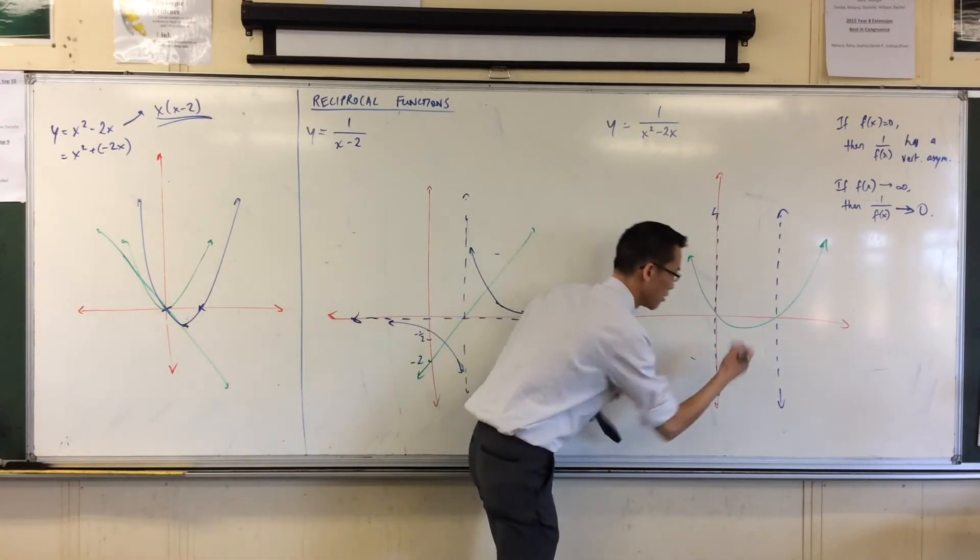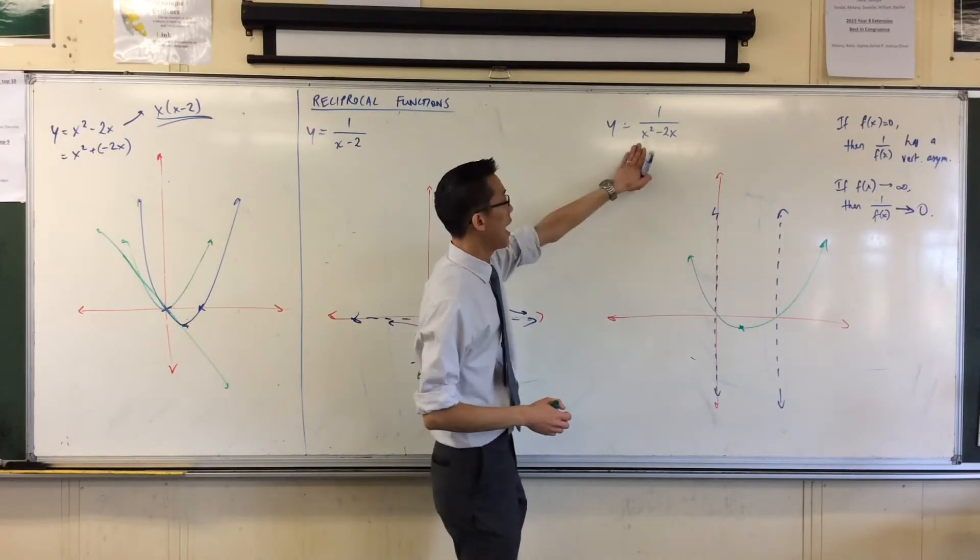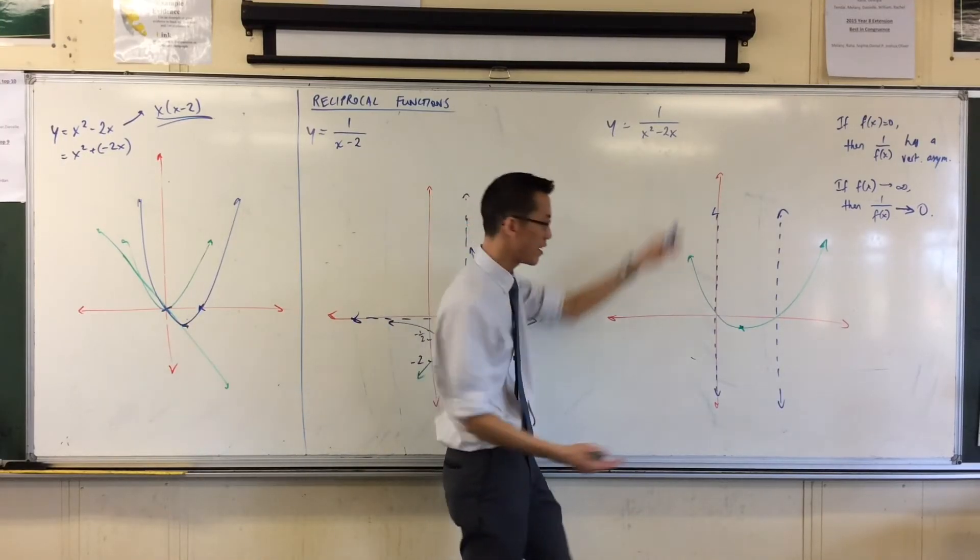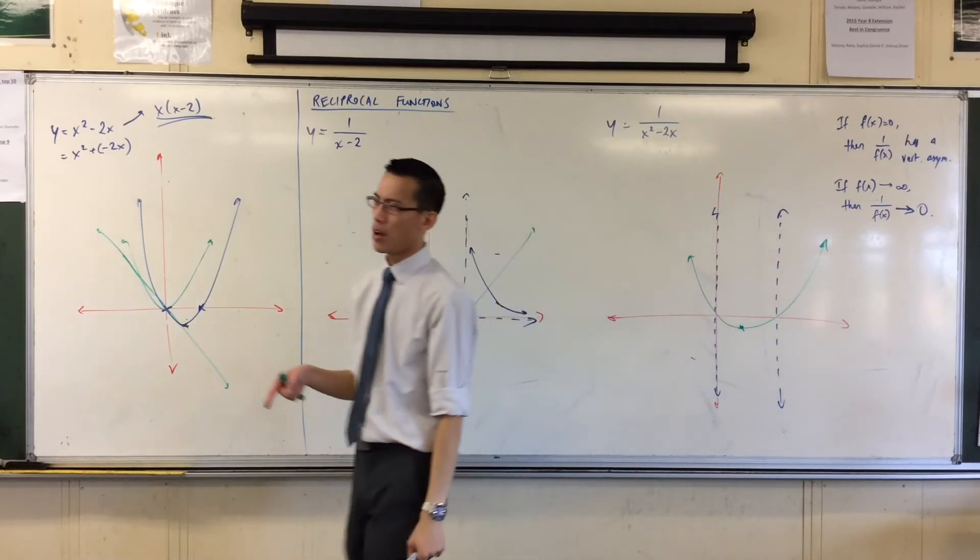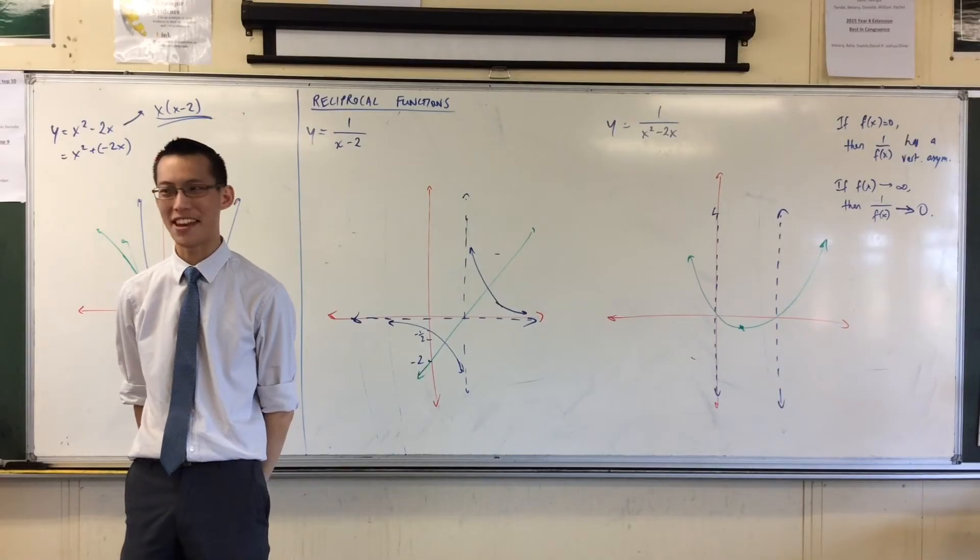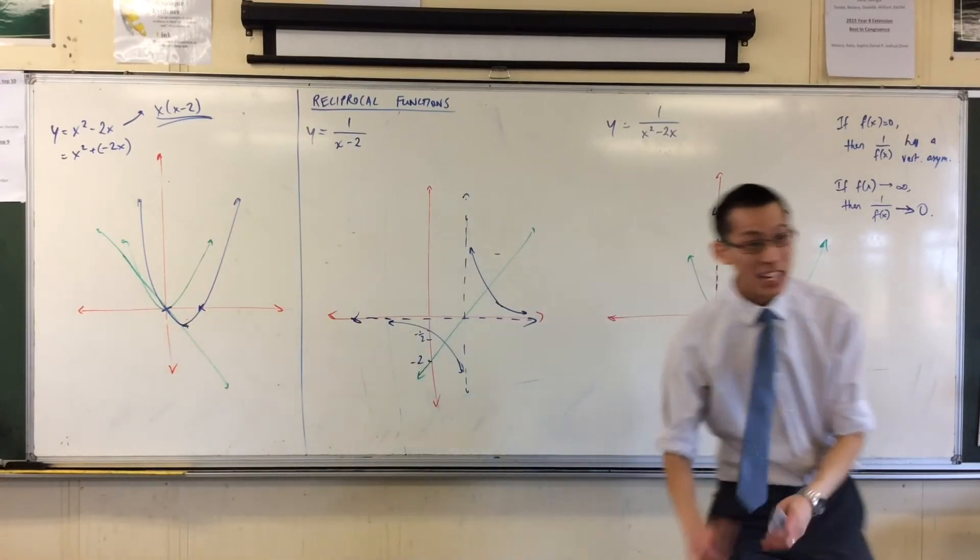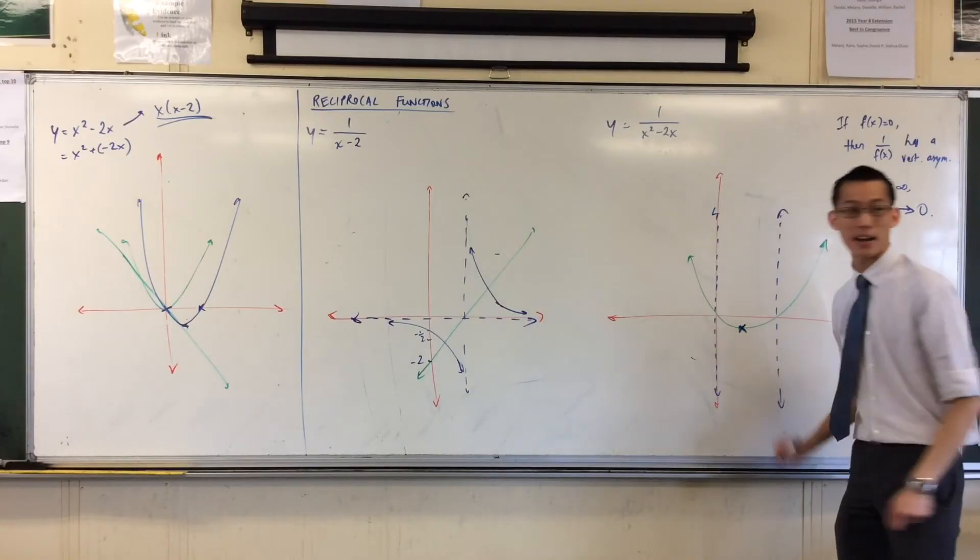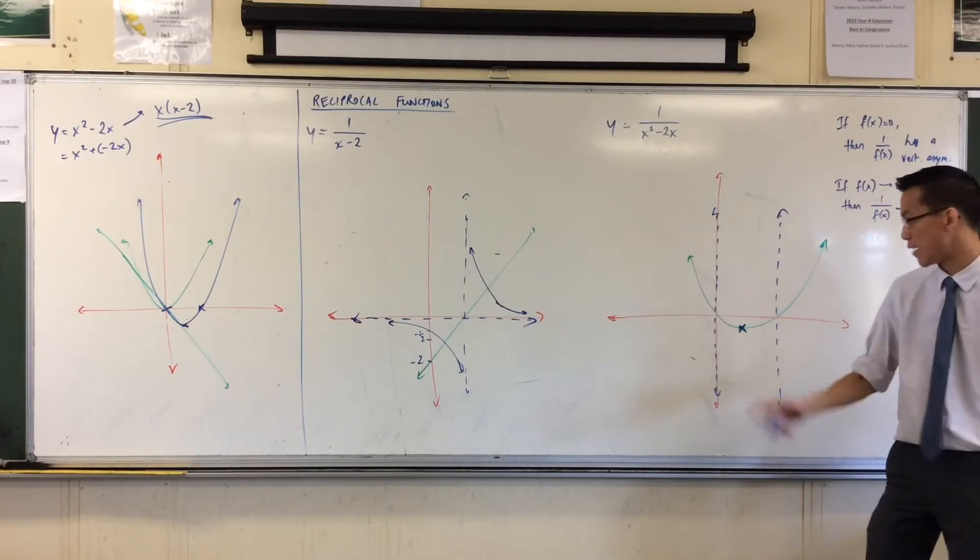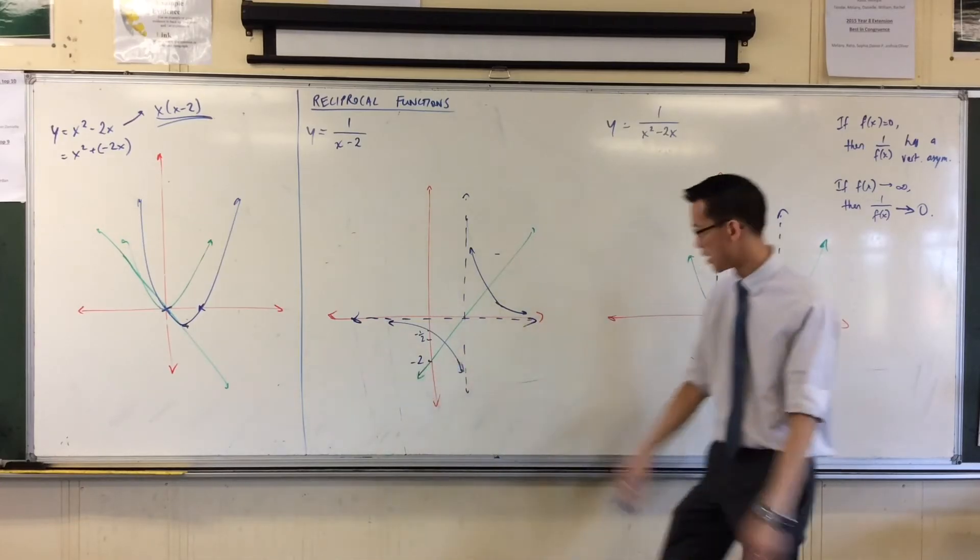It's going to be 1, and 1 take away 2 is negative 1. So that point is 1 negative 1. The ordinate is the part I'm interested in. What's the reciprocal of negative 1? It's negative 1. So, therefore, my actual graph is also going to pass through that point, and that's important to me. I've said it's there. Just like I said, this intercept was there. So far, so good?